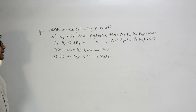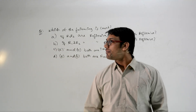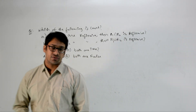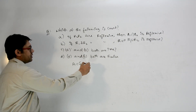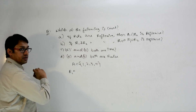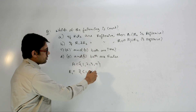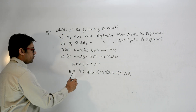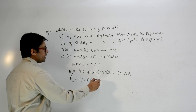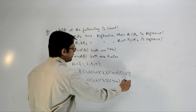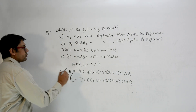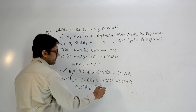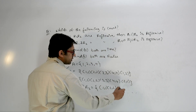Now consider: if R1 and R2 are reflexive, then is R1 ∩ R2 reflexive? Take set A = {1,2,3,4}, with R1 = {(1,1),(2,2),(3,3),(4,4),(1,2)} and R2 = {(1,1),(2,2),(3,3),(4,4),(2,1)}. Both are reflexive. R1 ∩ R2 = {(1,1),(2,2),(3,3),(4,4)}. Since any reflexive relation must contain all diagonal elements, and both R1 and R2 must have them, their intersection will always contain them.